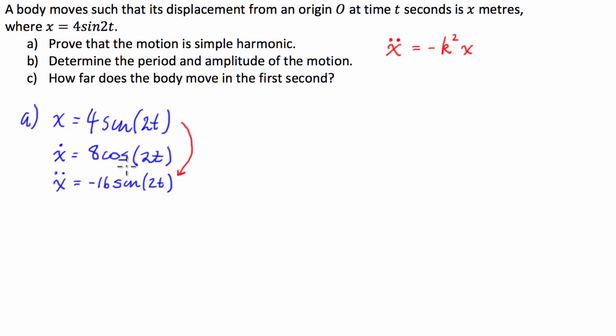So, what we can say is, this equation here, this x double dot, is equal to, we could say it's negative 4 times 4 sine of 2t, which is just simply negative 4 times the displacement equation.